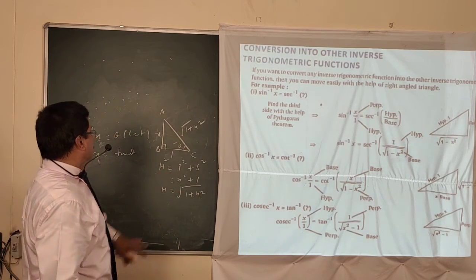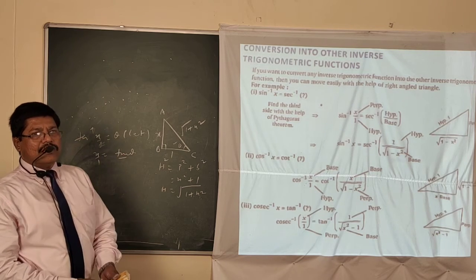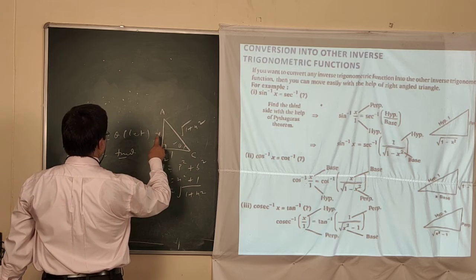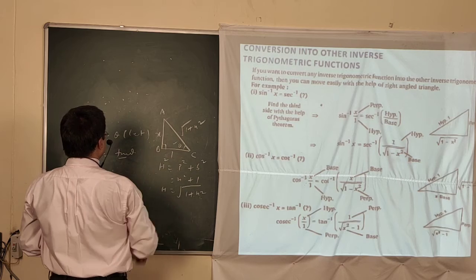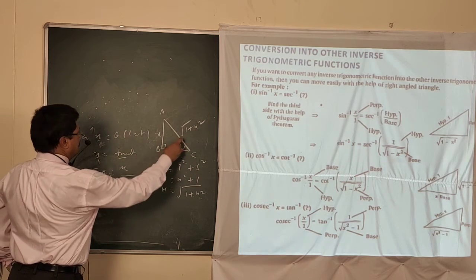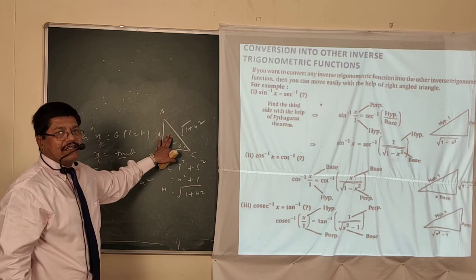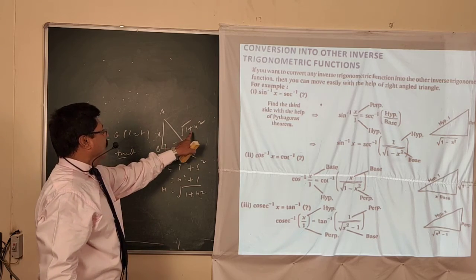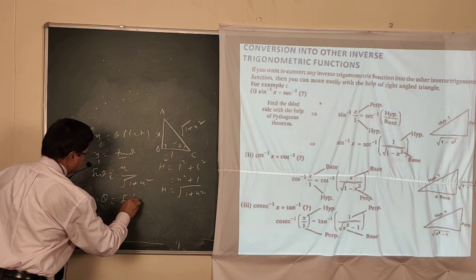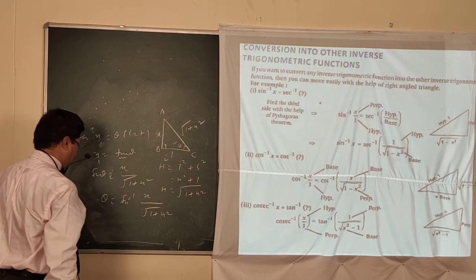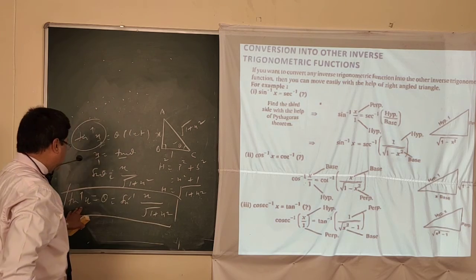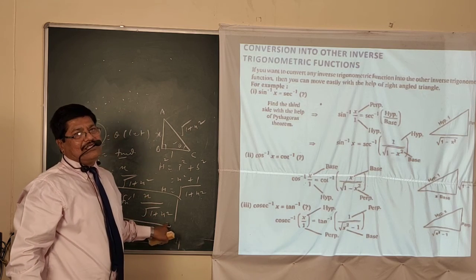The perpendicular is x and the hypotenuse is √(1+x²). So sin θ = x / √(1+x²). Converting sin θ as an inverse function, θ = sin⁻¹(x / √(1+x²)). Therefore tan⁻¹x = sin⁻¹(x / √(1+x²)). Like this you can convert any trigonometric ratio into another form.